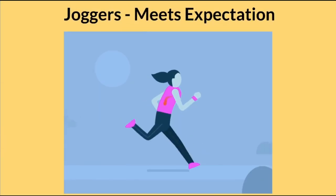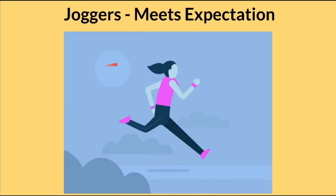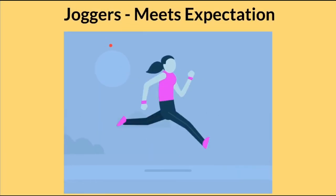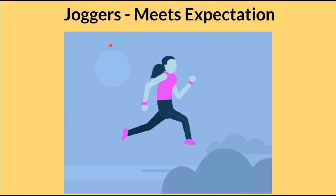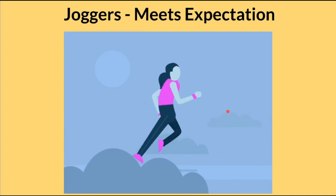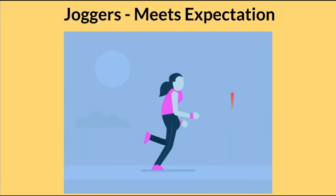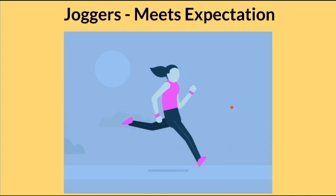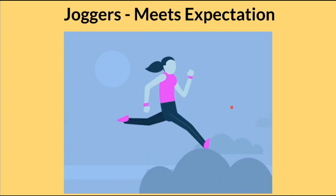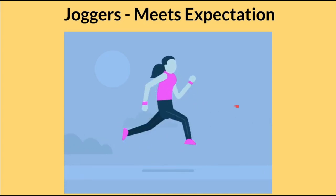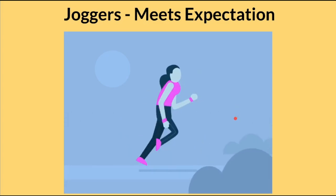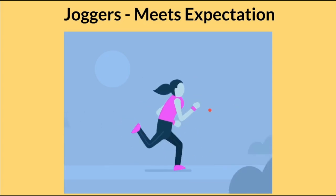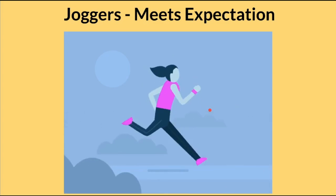The next team member quality is joggers. The joggers within the team just meet the expectation. If the team needs a task to be completed, the joggers will complete it efficiently, but they lack confidence. And one more point — they crave recognition a lot.